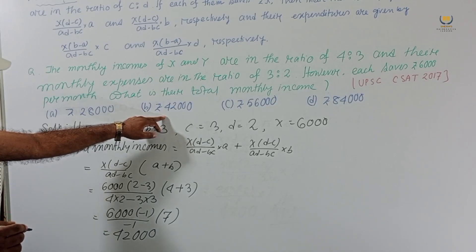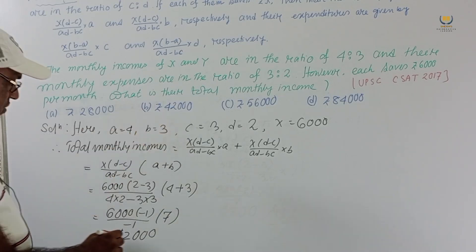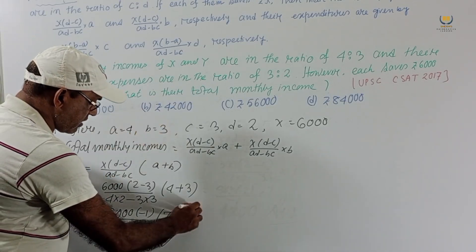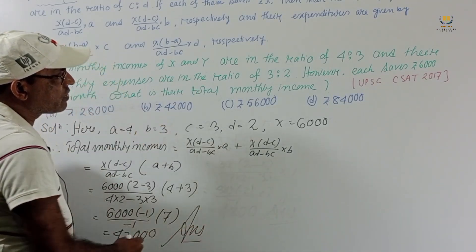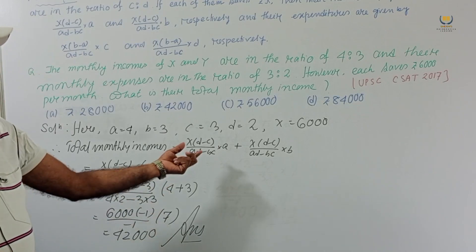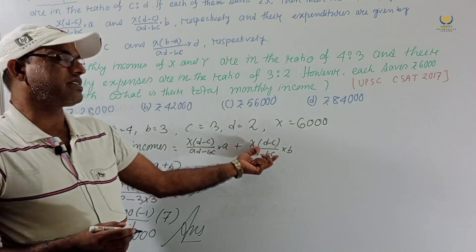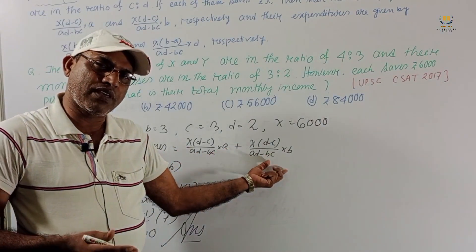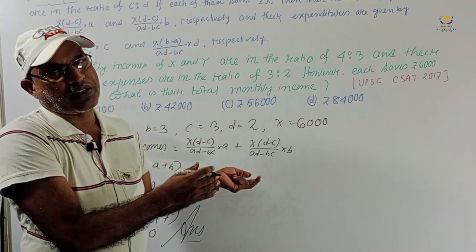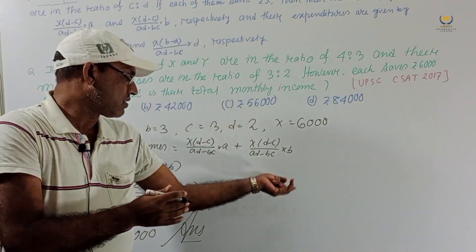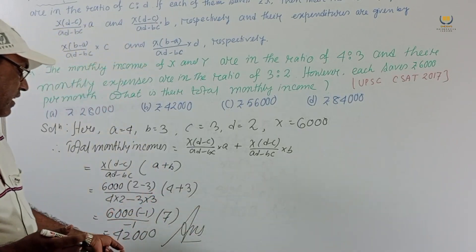So option B, 42,000, is the correct answer. We can also find the first and second person's incomes separately and add them to get the same result.